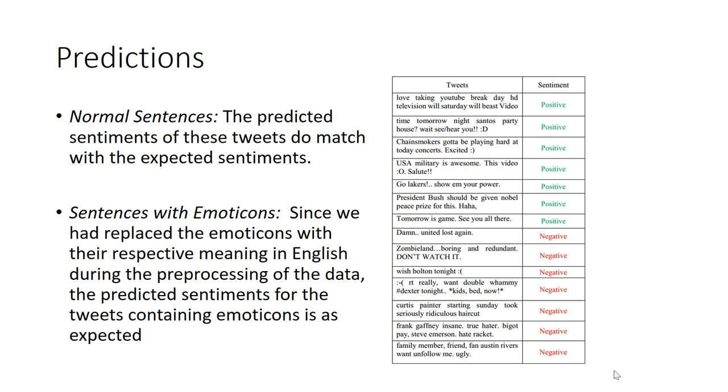Now let's look at some of the predictions which were done using our CNN model. For a normal sentence, the predicted sentiment of the tweets did match with the expected sentiments. Let's take the example of this tweet: 'USA military is awesome. This video, salute.' Now in this tweet, USA military is called awesome which is a positive word and salute is an action which is also a positive word. So the final sentiment is also positive.